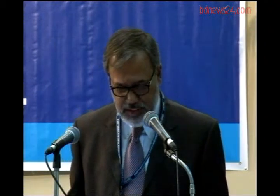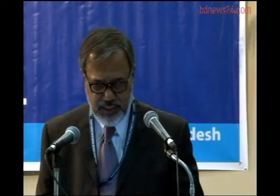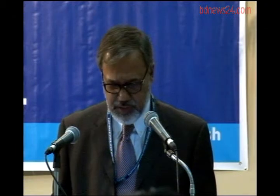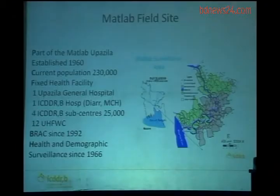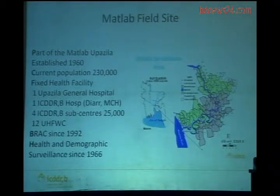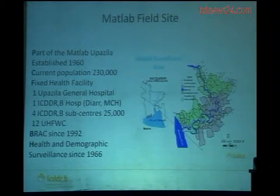Today's presentation, as I said, is on neonatal mortality. Matlab is a rural site nearly 50 kilometers southeast from Dhaka, as you can see in the map. The population under surveillance is currently around 230,000, where our health and demographic surveillance workers visit households once every two months and collect demographic and health data. The area is divided into two parts: one having ICDDR,B intervention with limited outside health services, and the other having usual government health services.